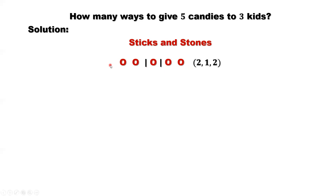This is just one solution. The first group — number of candies — that's two. That means the first kid receives two candies. The second kid receives one candy. The last kid receives two candies.